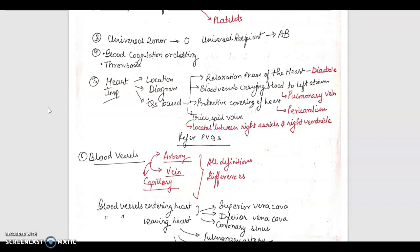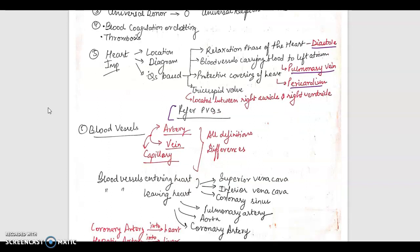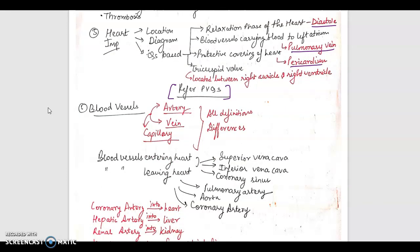The most important part here is the diagram of heart. It is very intricate and location questions will be based on that. Relaxation phase of the heart is called diastole. Blood vessels carrying blood to left atrium is pulmonary vein. Protective covering of heart is pericardium. These are some very basic questions and they may ask you the location of tricuspid valve, that is located between right auricle and right ventricle. Please refer to the previous year questions, they have been repeated a lot.